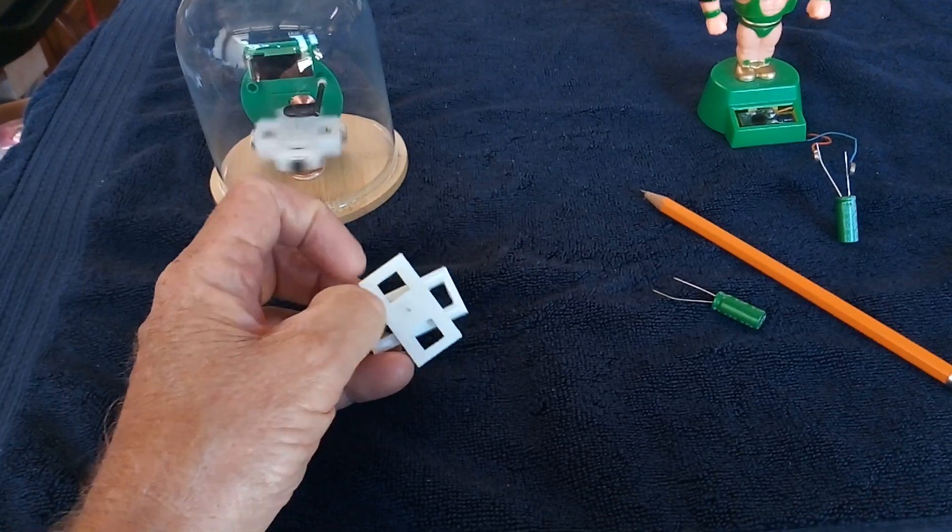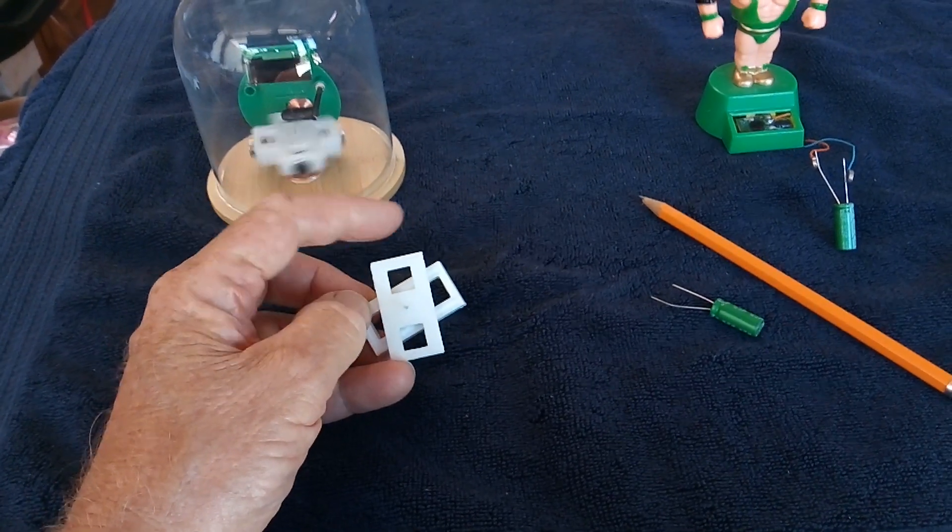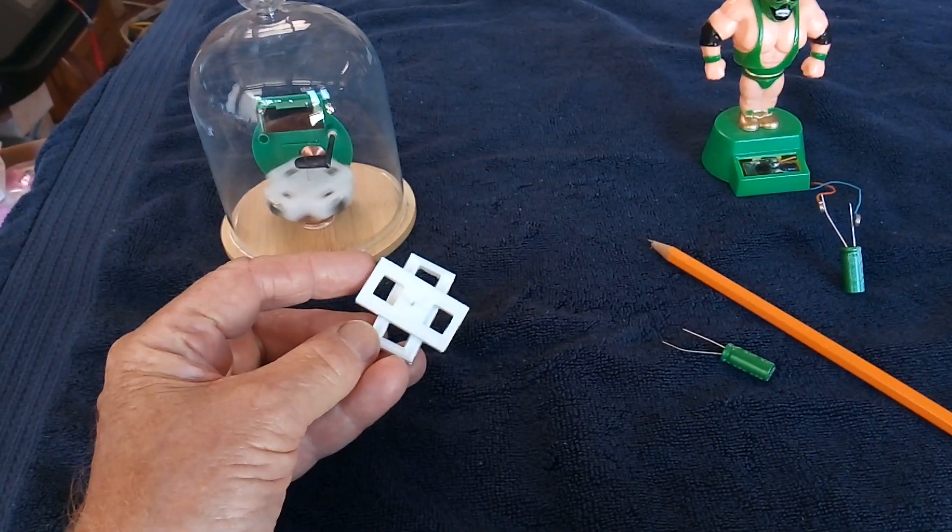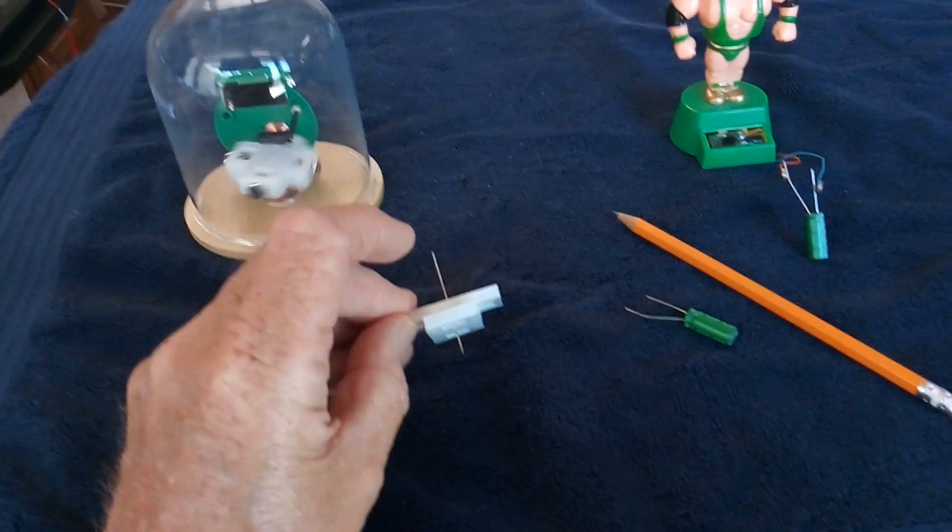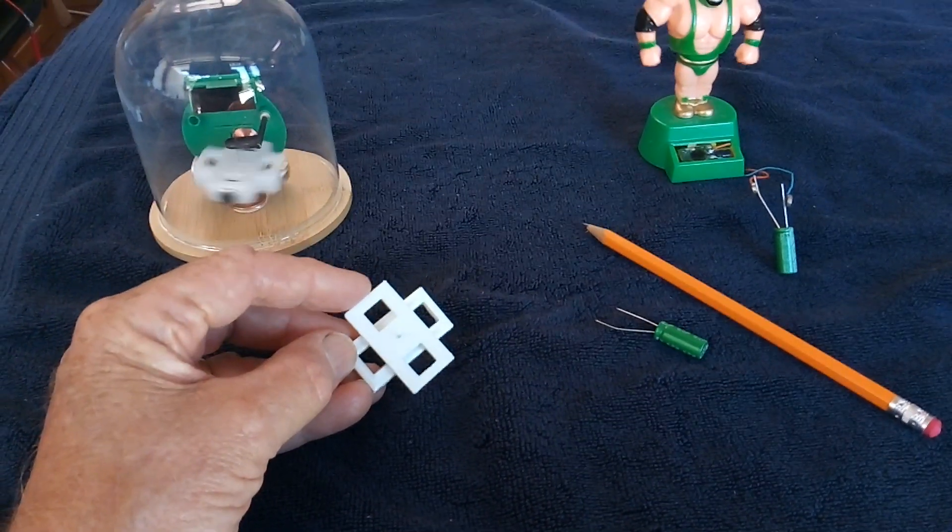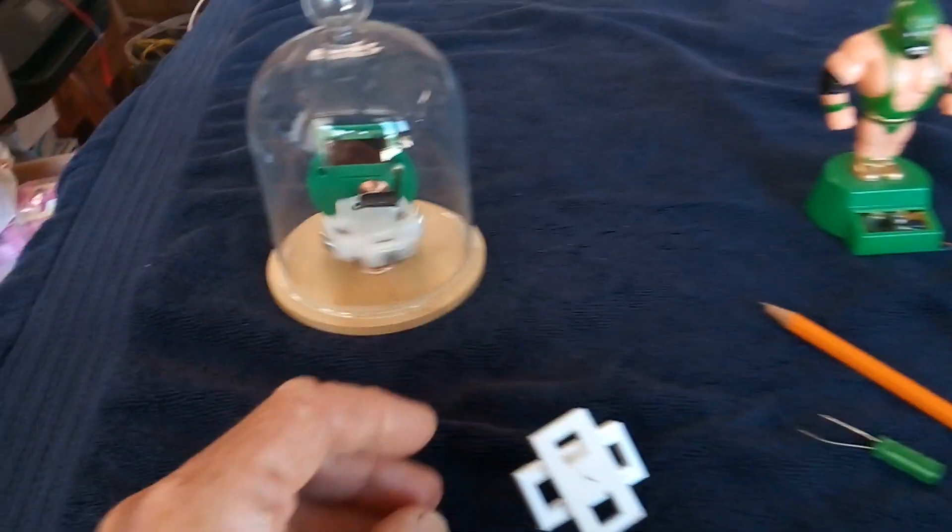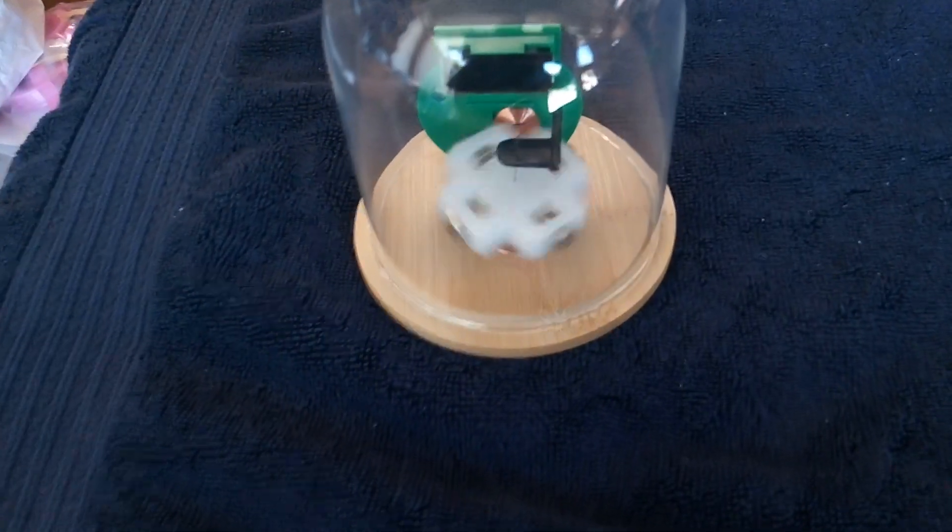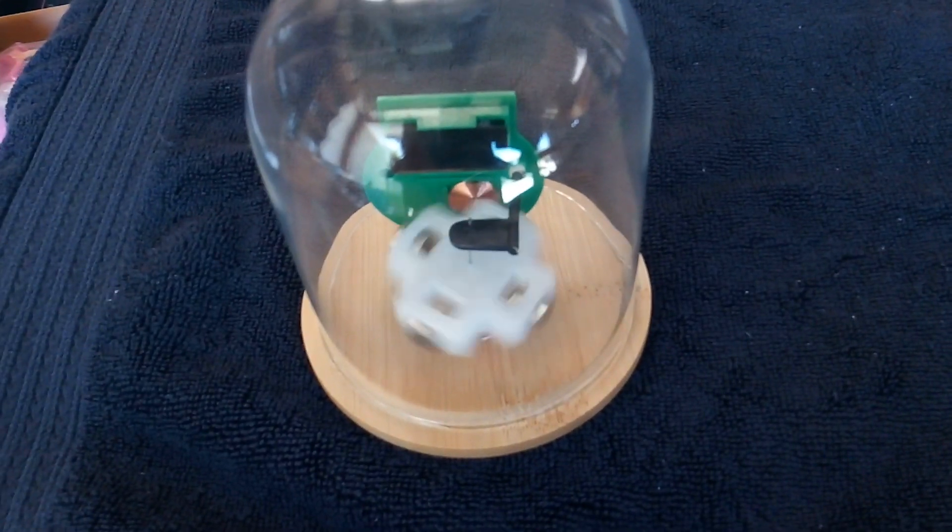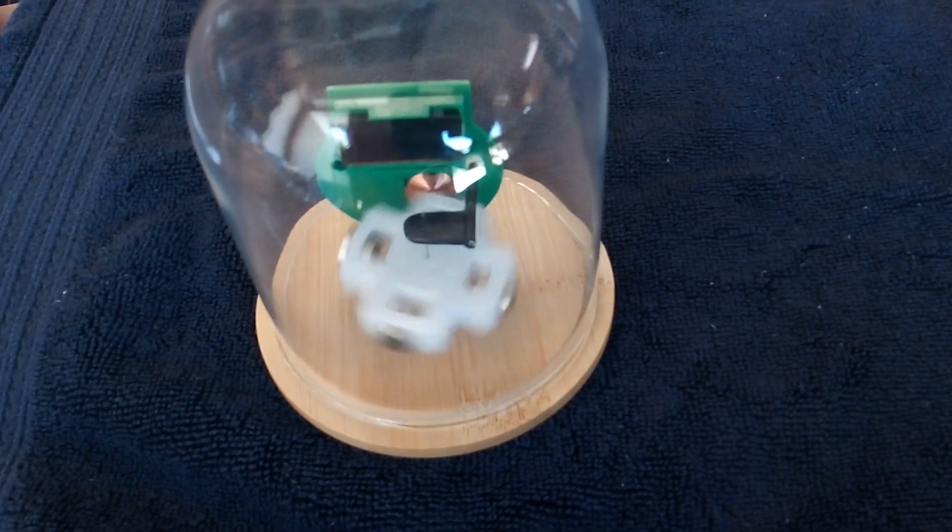But then I thought, what if I make basically a four magnet rotor by going into Tinkercad, building two of these, and then blending them together into one rotor using the software? And it worked great. That's the 3D printed rotor that is basically that all blended together into one piece, and it worked really really good.